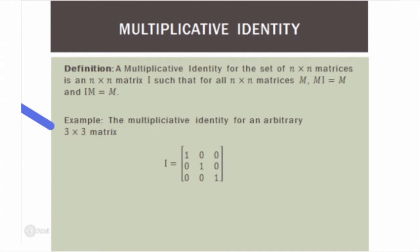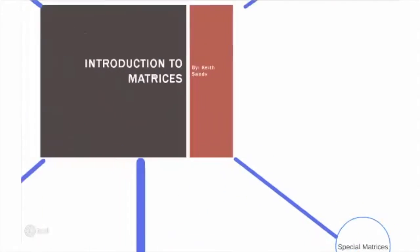Now the multiplicative identity: a multiplicative identity for the set of n by n matrices is an n by n matrix I such that for all n by n matrices M, M times I equals M and I times M equals M. The multiplicative identity for an arbitrary 3 by 3 matrix is as shown, because multiplying any arbitrary matrix by it just returns that arbitrary matrix.